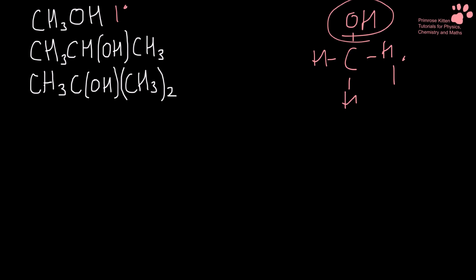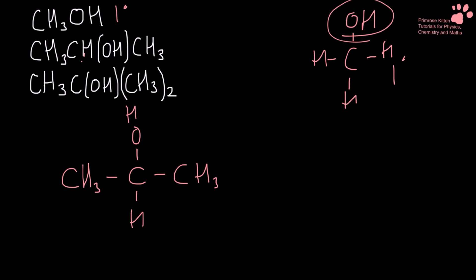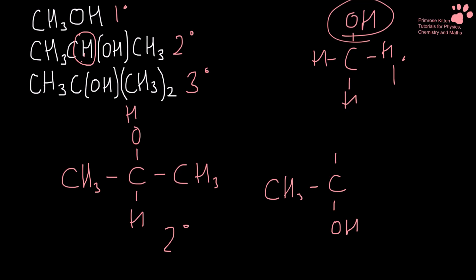The next one is a secondary alcohol. We have CH3 over here, a carbon, one hydrogen, the OH group, and then another CH3. This is secondary because the carbon that the alcohol is attached to has one other carbon next to it. And then we have a tertiary alcohol — up in the previous example there was one hydrogen making it secondary, but here there aren't any other hydrogens close to it, which tells us we are looking at a tertiary alcohol.